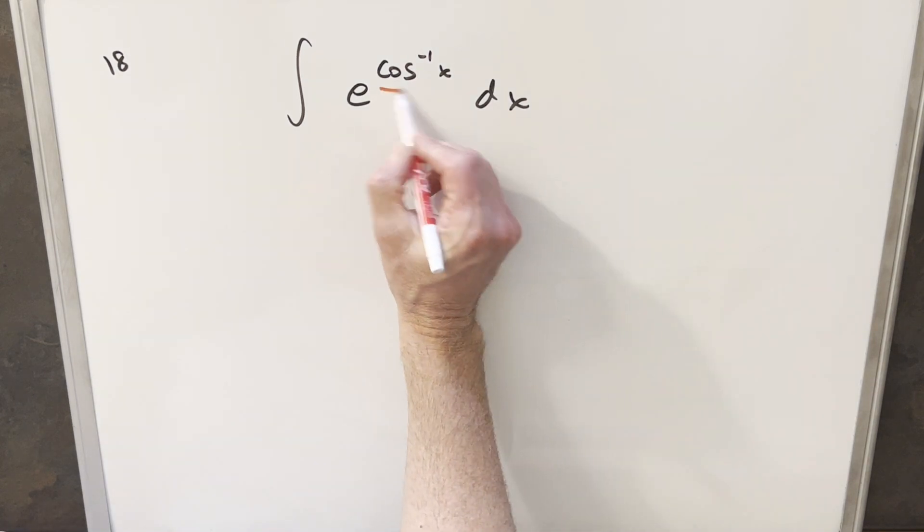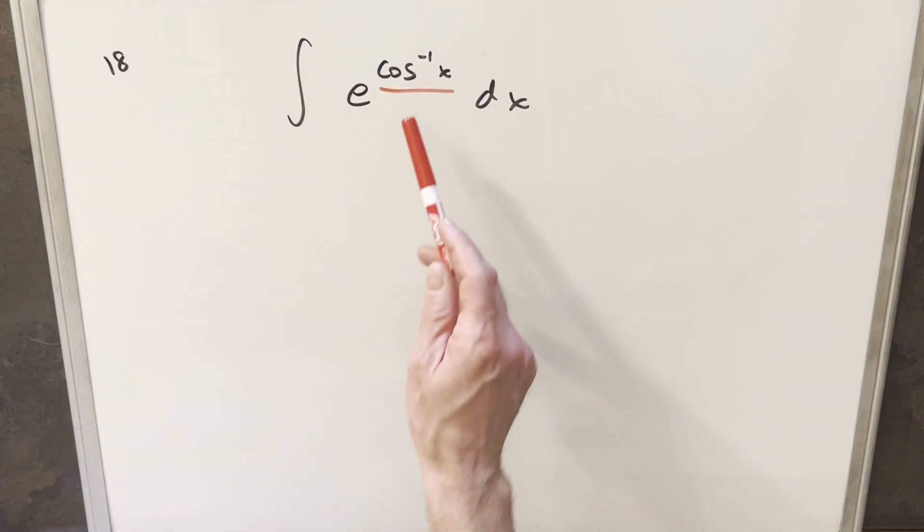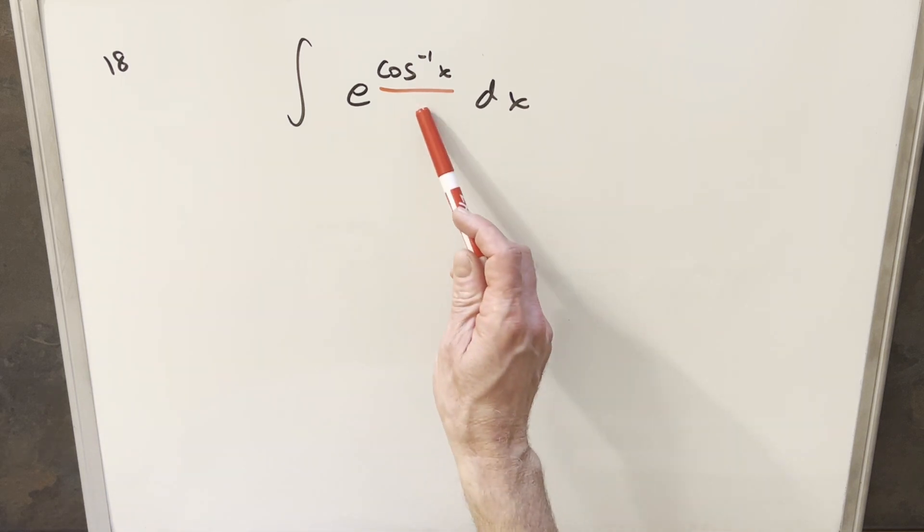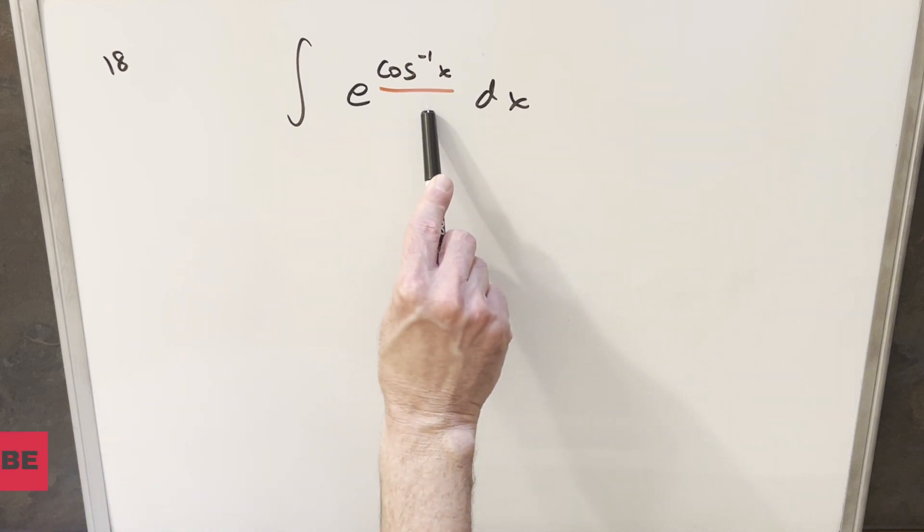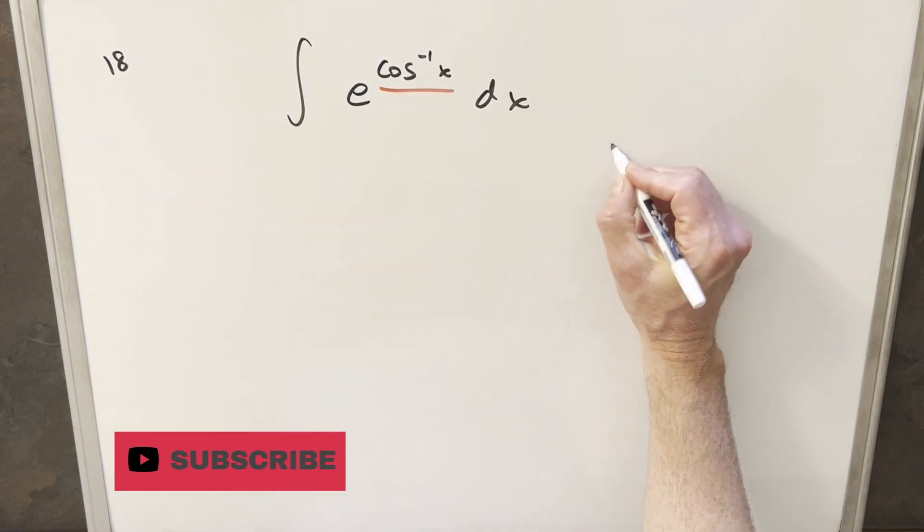Right away this whole thing is really about this arccos(x). Now, the inverse functions can be kind of difficult to deal with anyway, but we really don't want that as the exponent on e. So I'm thinking I want to deal with this somehow, and the best way I know is to do just a u substitution.